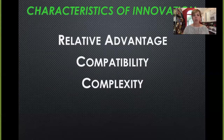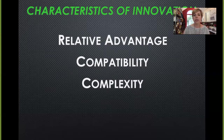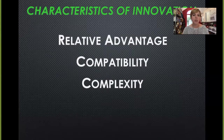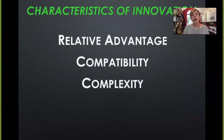An example of complexity would be the camera. When the camera was first invented, it was very complex. But as innovations progressed, they added drop-in film, built-in flash, auto-focus, zoom, and different lenses all included in one. They added digital technologies and took away the film. It's now so easy that we all carry a really complex camera in our pockets connected to our phone. You can see the relative advantage, the compatibility with what you know, and the complexity is low.